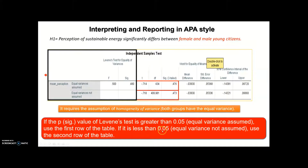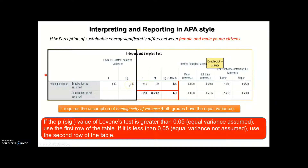If the Levene's test sig value or p-value is less than 0.05 — my alpha level — it means that equal variance of my groups is not assumed. For that reason, I should look at the second row of the table. But in this example, my sig value is clearly greater than 0.05, which represents equal variance assumed for my groups.